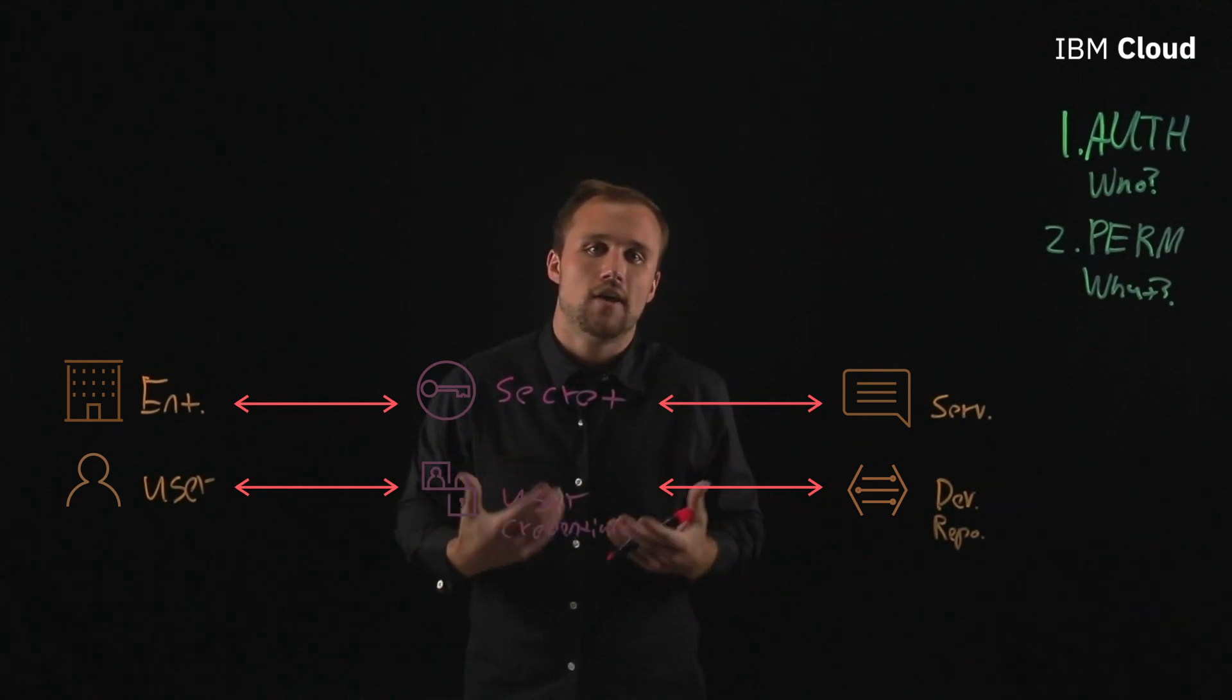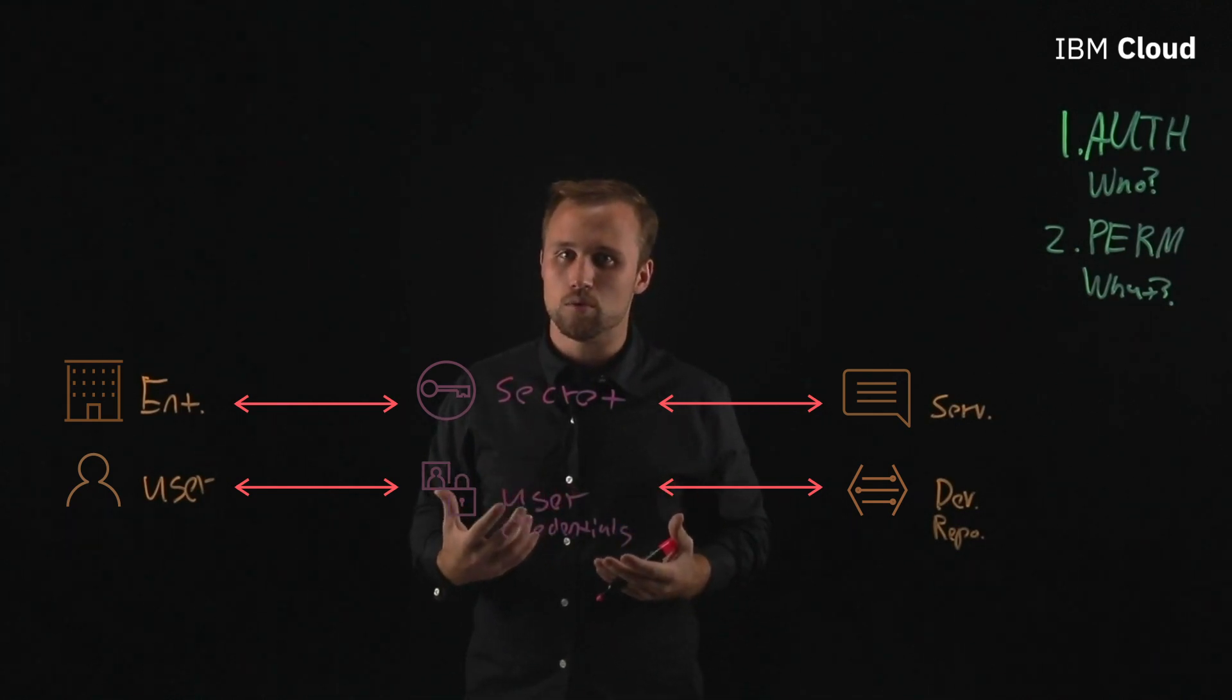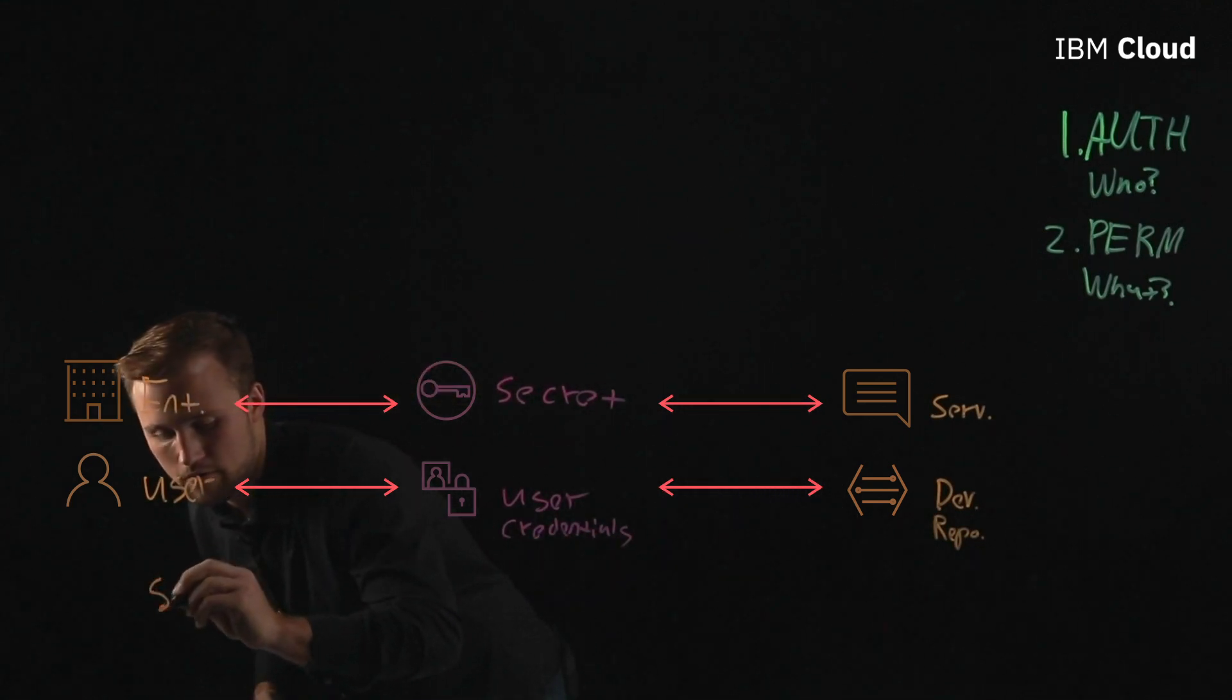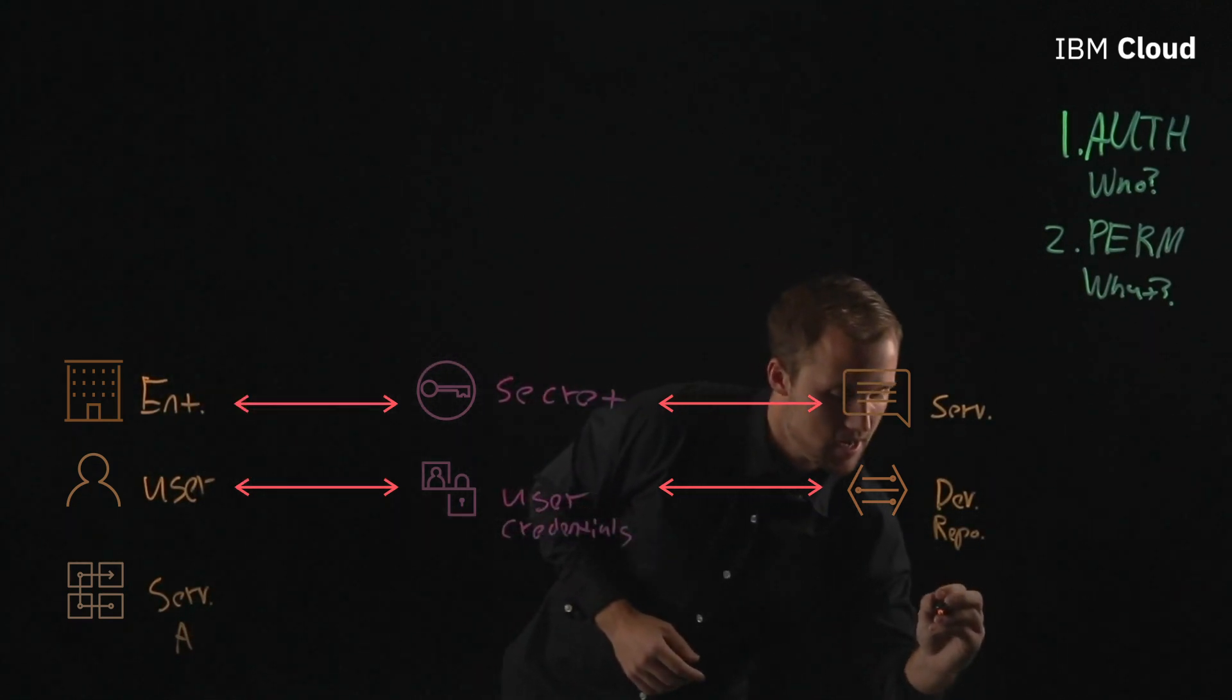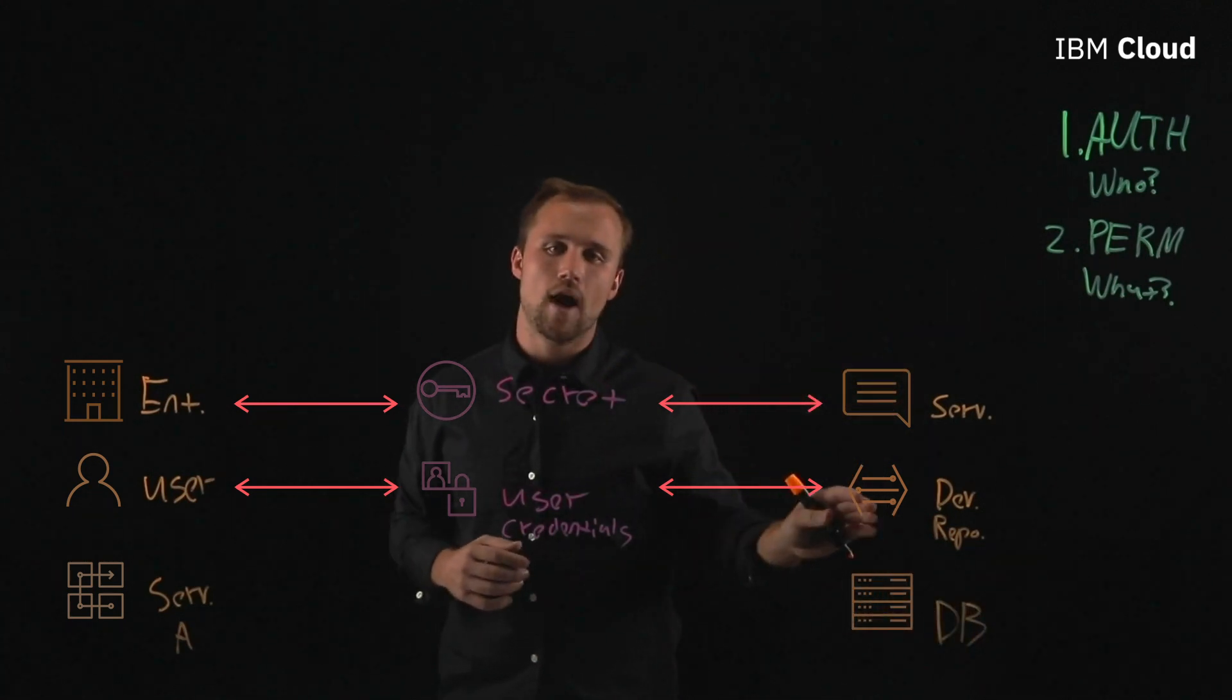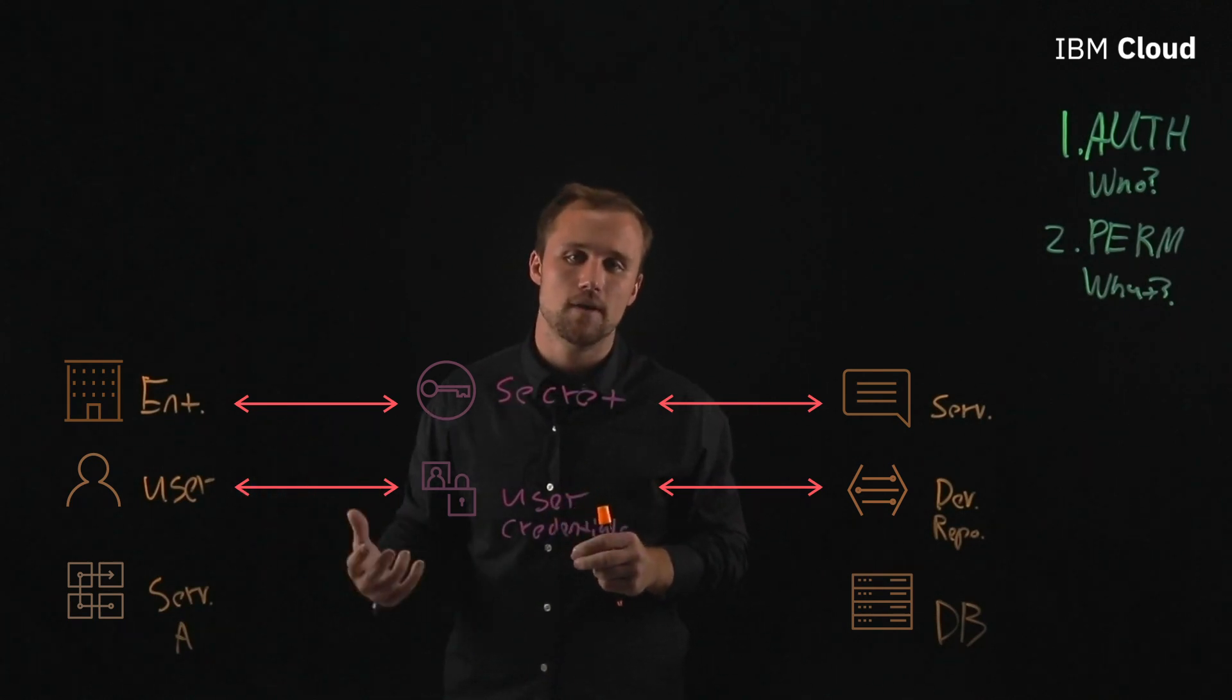Now looking at a cloud native application story we have a lot of microservices that have to talk to each other. So let's look at that. So let's just call it service A that needs to interact with a database called DB and grab a piece of specific information that it needs to get its job done.